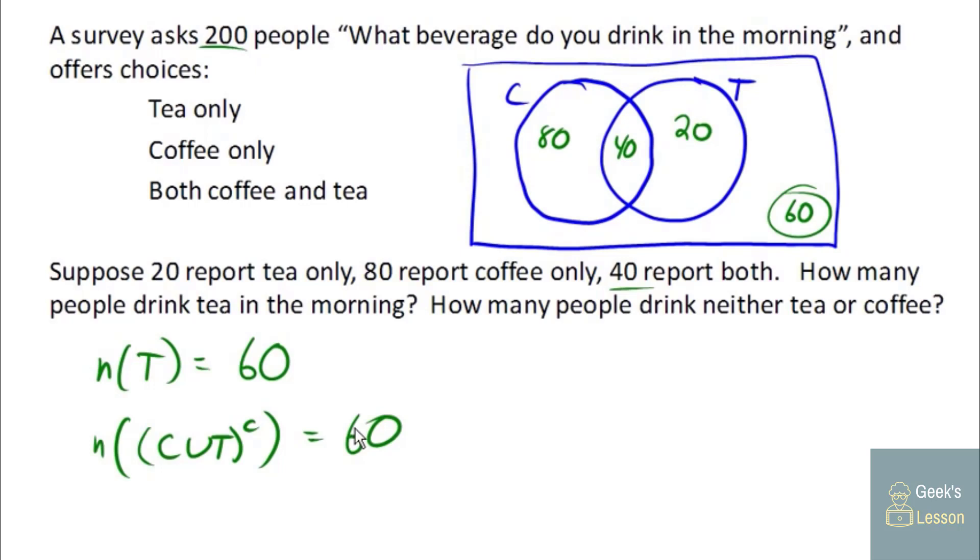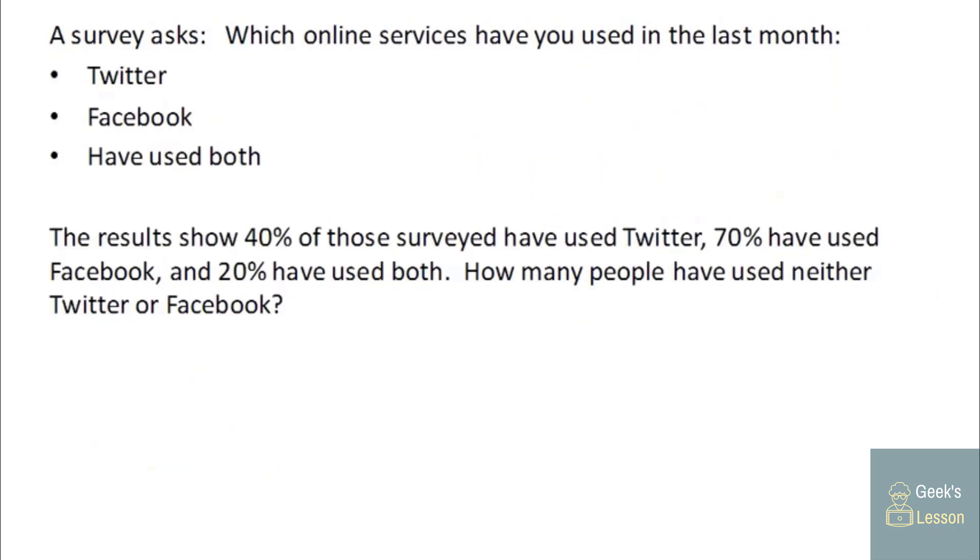Let's look at another one. Here we have a survey that asks which online services have you used in the last month? Twitter, Facebook, or have you used both? Now the survey results showed that 40% have used Twitter, 70% have used Facebook, and 20% have used both. But in this case, the 40% who said they've used Twitter includes those who have used both. A little bit different of a scenario here. And so here we've got our Twitter circle and our Facebook circle, if you will.